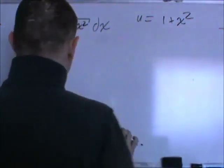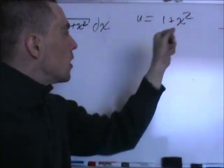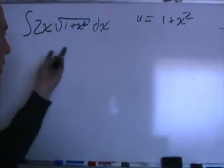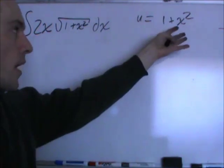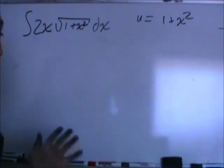Okay, now the question I need to ask is, is there a part of this derivative, the derivative of this, floating around somewhere else in the integrand? Again, the derivative of that is 2x, hot diggity, it's floating around. So, that works just fine.